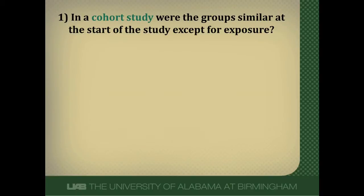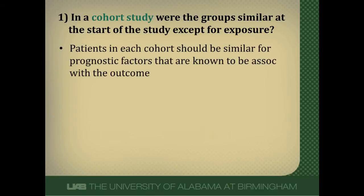So the first question is, if you have a cohort study, you need to know if the groups are similar at the start of the study, except for the exposure of interest. Patients in each cohort — and as a reminder, cohort studies have an exposed cohort and an unexposed cohort — should be similar for prognostic factors known to be associated with the outcome. In any study, we're trying to isolate the effect of one thing: the exposure on the outcome. We can't have lots of other things being different, such as demographic factors that might explain the outcome.